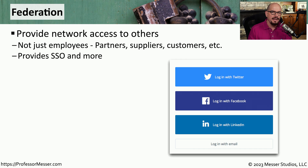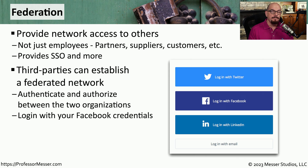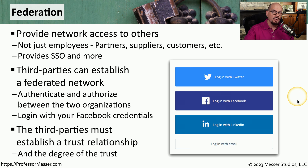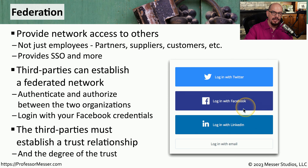There may be times when you'd like to log into a resource but don't want to create another account on that particular resource. Instead, you may want to take advantage of Federation. Federation allows network access without using a local authentication database — it can be done from many third parties that use a separate authentication database for logging in. You've probably seen a screen like this when logging in on a website, where instead of a separate email and password local to that site, you can use your Twitter, Facebook, or LinkedIn accounts to authenticate. For this to work, the website has to set up a relationship with those services, but once that link is made, any users can use their existing credentials to log into the third party website.